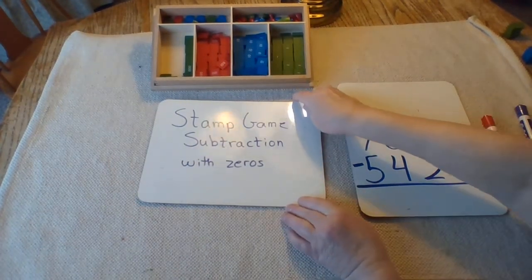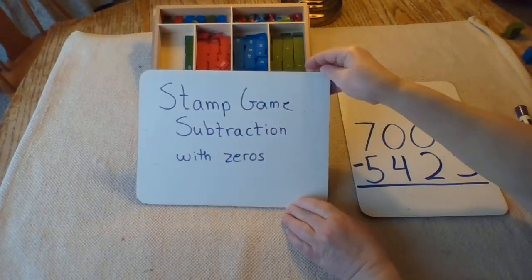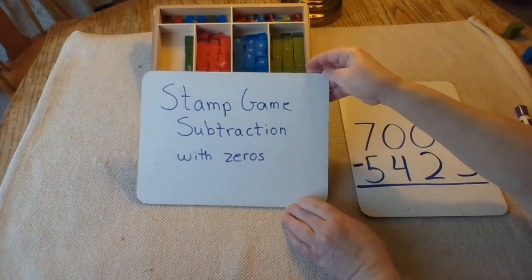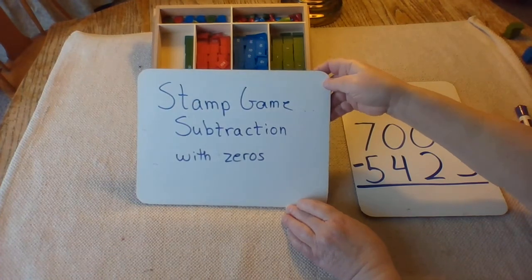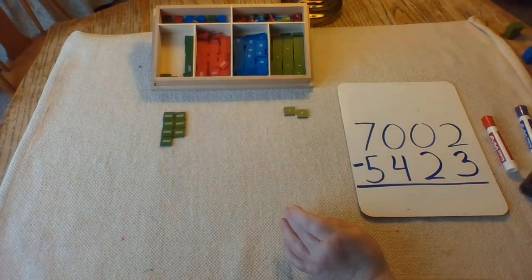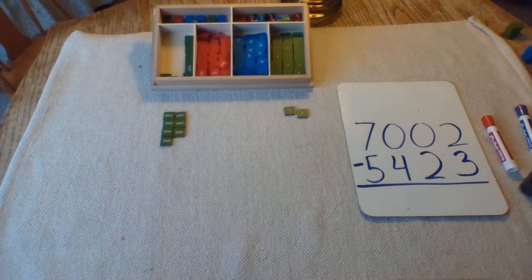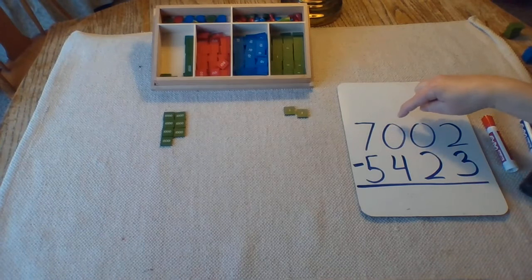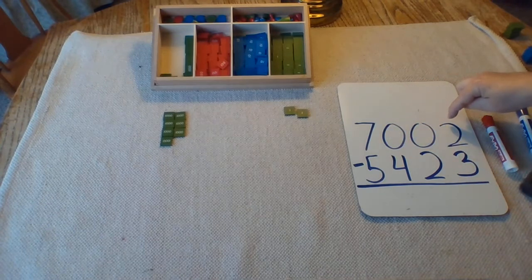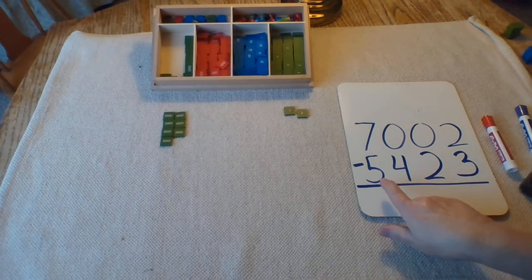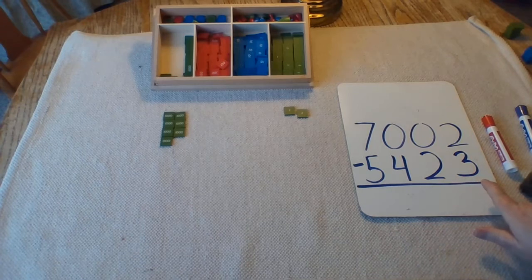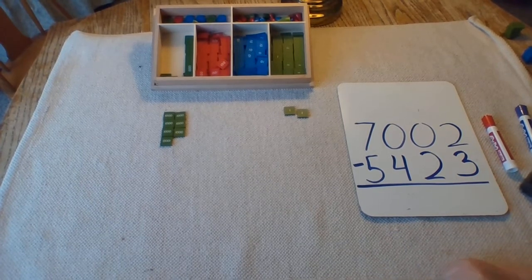Hi, this is Mrs. Barb, and this is the Stamp Game Subtraction with Zeros lesson. Our problem is 7,002 in the minuend minus 5,423 in the subtrahend.